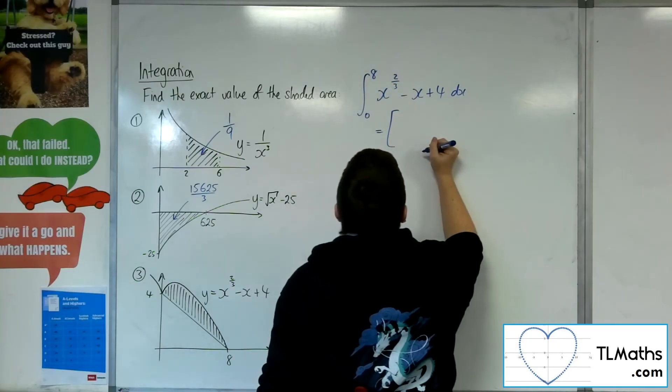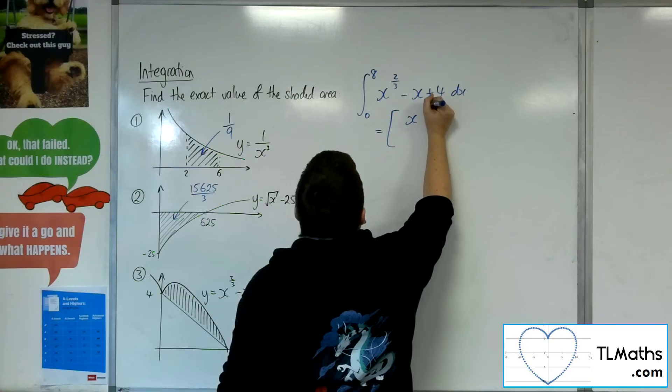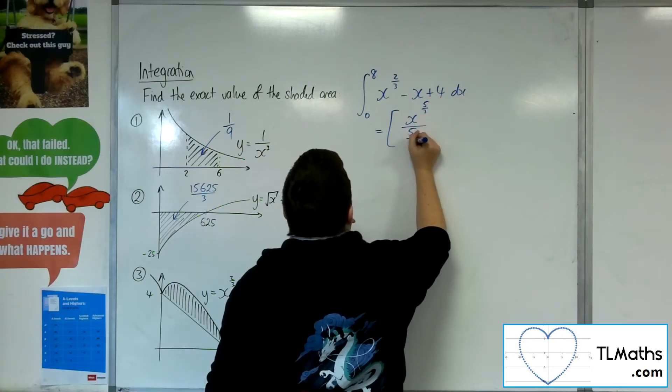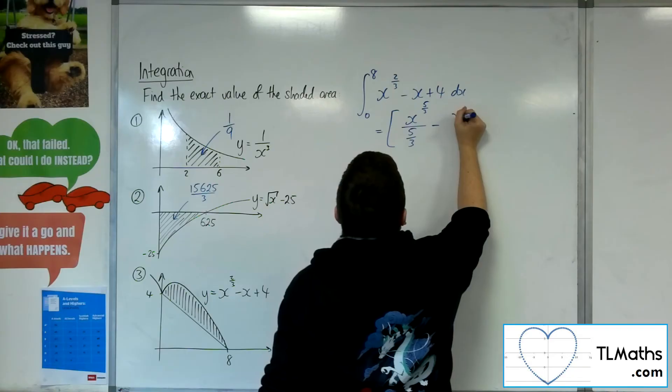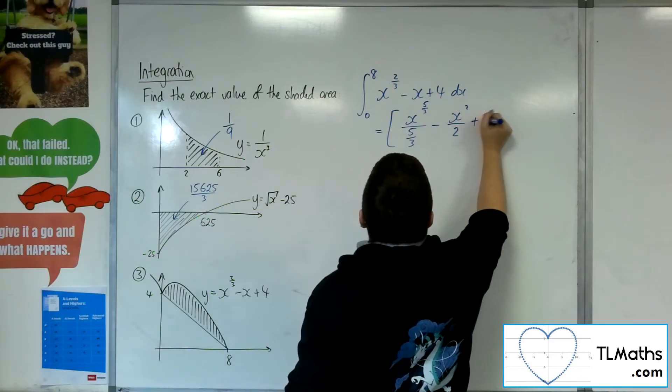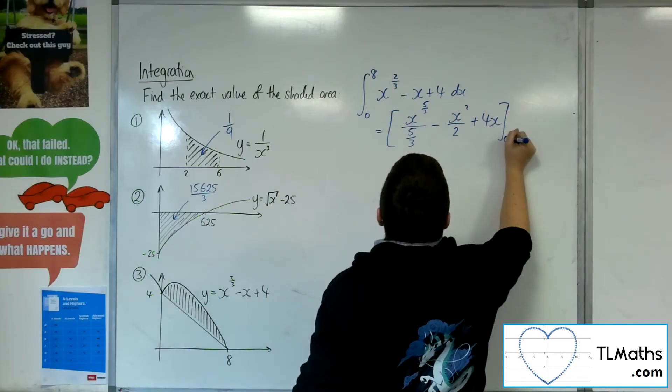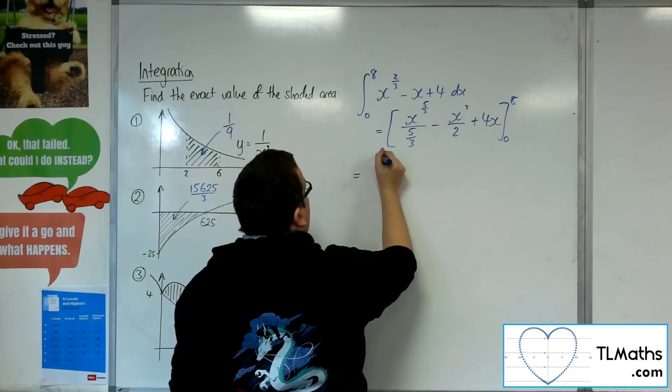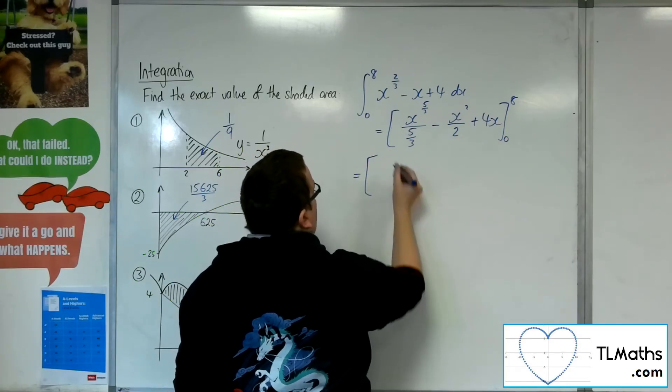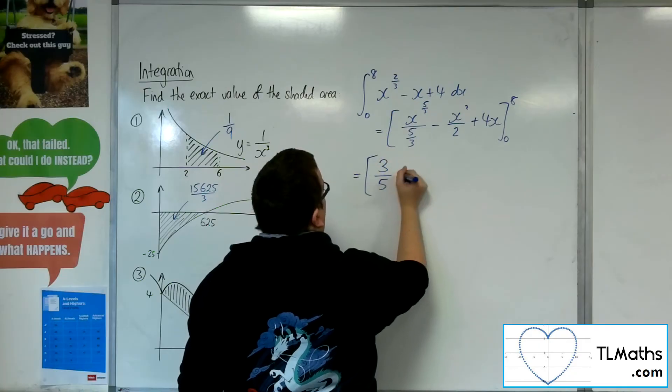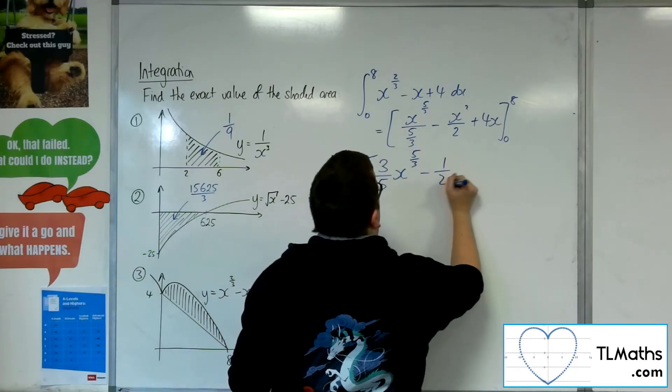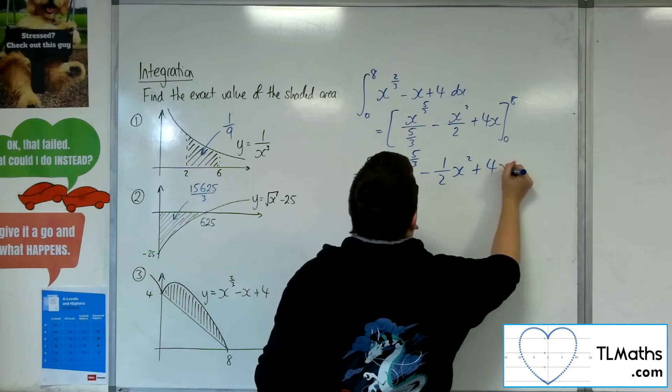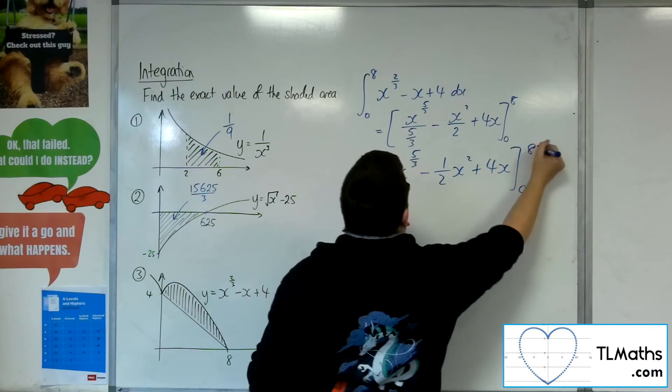So straight to square brackets. Add 1 to the power gets me to x to the 5 thirds, divide by the new power. And then x squared over 2 plus 4x, evaluated between 0 and 8. Right, so let's tidy that up before substituting in. So it's going to be 3 fifths x to the 5 thirds, take away 1 half x squared plus 4x, evaluated between 0 and 8.